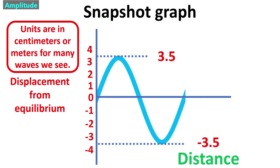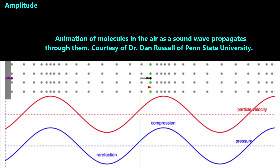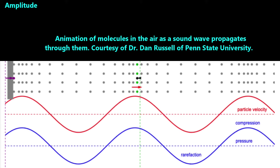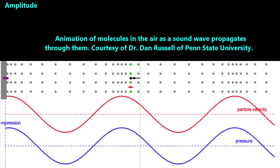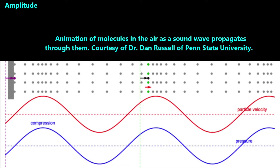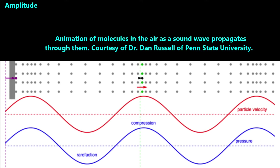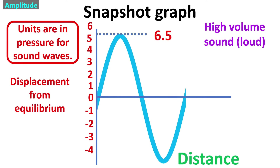The units for displacement are often in centimeters or meters, as in the case of this water wave and for many waves we can see. But the units are in pressure when we're graphing a sound wave. This animation shows a pressure wave in blue that corresponds with the oscillations of gray dots, which represent molecules in the air. When a sound wave propagates, it creates high-pressure regions called compressions, which are followed by low-pressure regions called rarefactions. Please note that the pressure graph is shaped like a sine wave, as are most waves we graph in K-12 education. As we turn up the volume of our speakers, the pressure in the air with each wave gets higher, so the amplitude gets bigger.